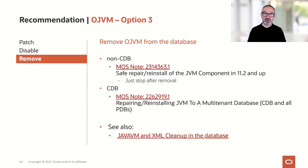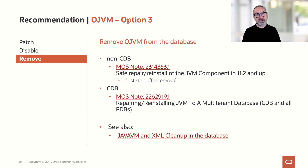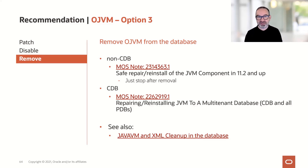The third option is to remove OJVM from the database entirely. Our OJVM colleagues don't love that recommendation, but in some cases it's the only way. Honestly, as we'll explain in follow-up seminars about upgrade speed, the fewer components you have in your database, the faster your upgrades run. It's possible to safely remove OJVM — it's explained in two MOS notes using a safe, repair, and reinstall process. You simply stop after the removal step and don't reinstall, and then OJVM is gone.